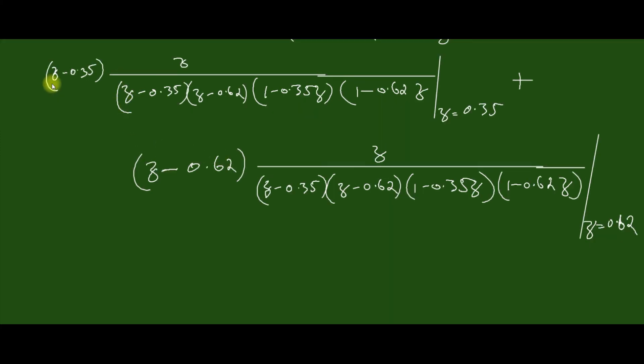Which are given by z minus 0.35 into this time at z equal to 0.35. So these two will cancel. Now similarly 0.62 and these two will cancel. Now we can substitute for 0.35.